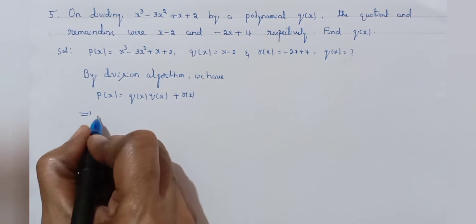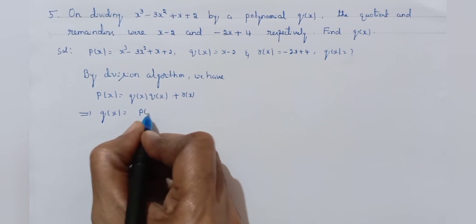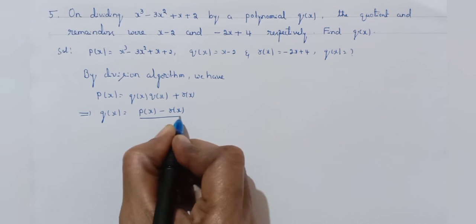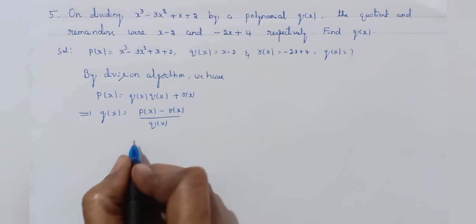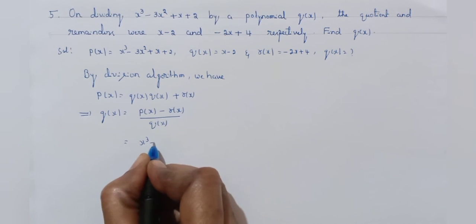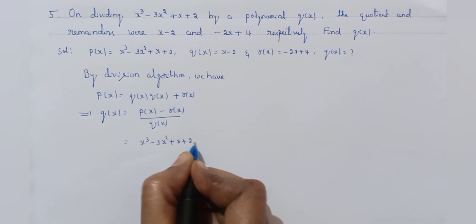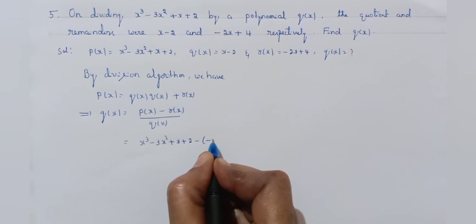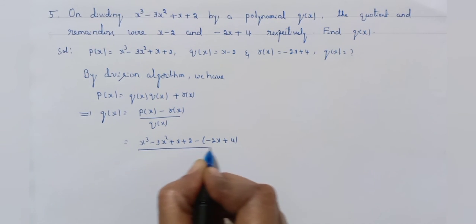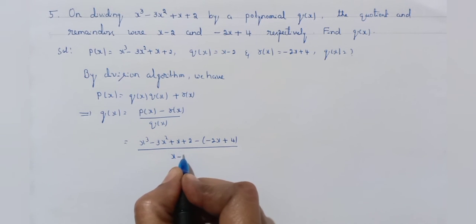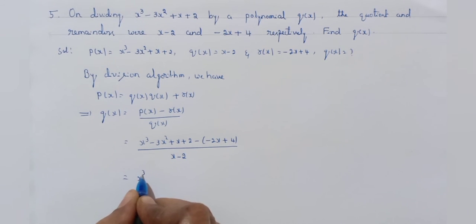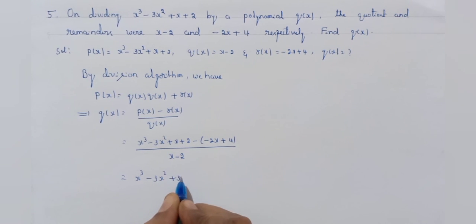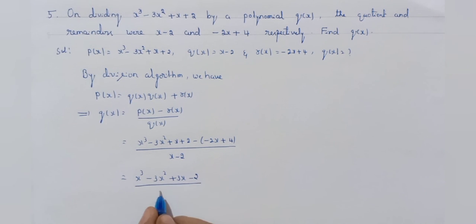Therefore g of x is equal to p of x minus r of x, divided by q of x. p of x is x cube minus 3x square plus x plus 2, and r of x is minus 2x plus 4. So p of x minus r of x gives x cube minus 3x square plus 3x minus 2, divided by q of x which is x minus 2.